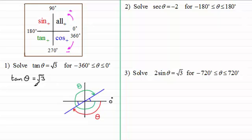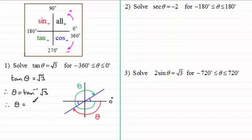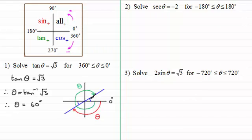To work out what θ is, we take the inverse tan of both sides. So θ equals the inverse tan of positive root 3. Assuming your calculator is in degrees mode, the answer is θ equals 60 degrees. Now 60 degrees is not an angle in this range, but it would be a valid solution if the range were 0 to 360 degrees. What it represents is the reference angle of 60 degrees, which we use to find our solutions.